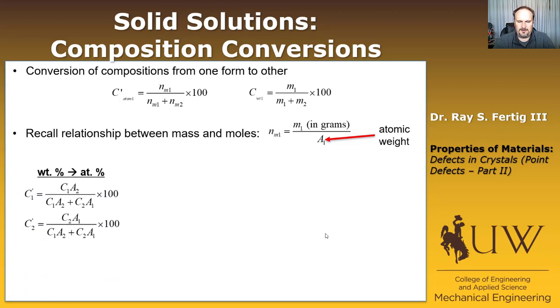The first is, how do we go from weight percent to atomic percent? The composition in atomic percent of element one is given by this equation. Composition of element two in atomic percent given by this equation, where the C1 and C2 values are the weight percent values. And we can go back the other way. So now this is the weight percent, and here's the C1 prime is the atomic percent of element one.